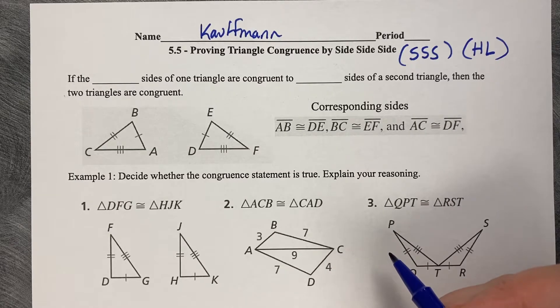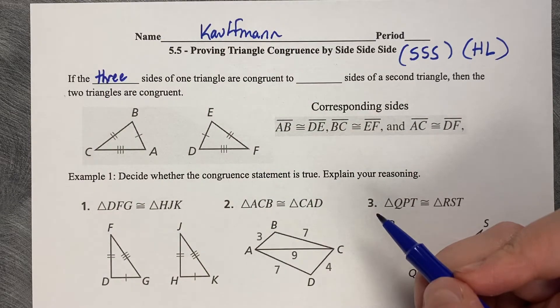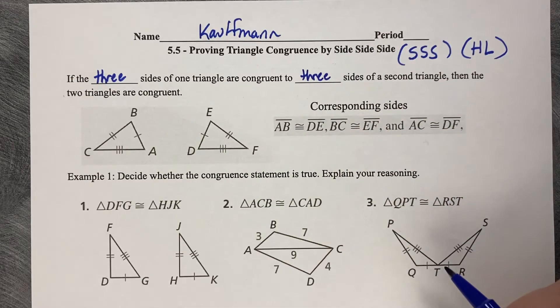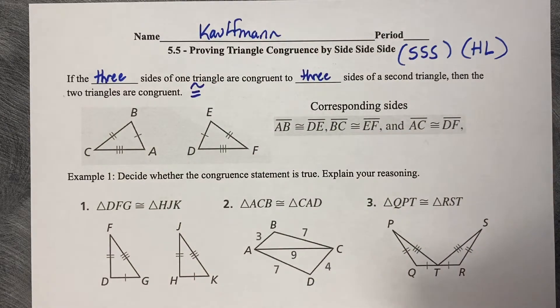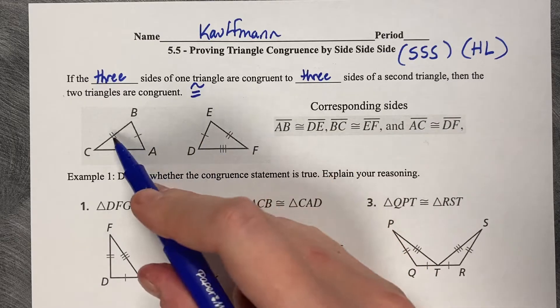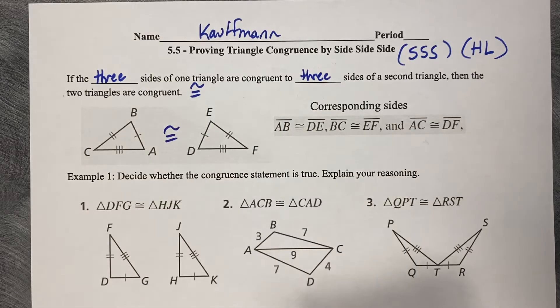First, side-side-side. If the three sides of one triangle are congruent to three sides of a second triangle, then the two triangles are congruent. Recall that this symbol means congruent. Here are the corresponding sides: one tick mark with one, two with two, three with three. So these two triangles are congruent or exactly the same.